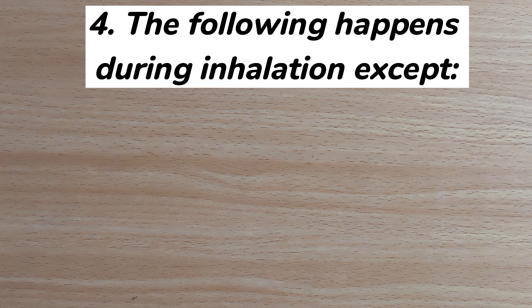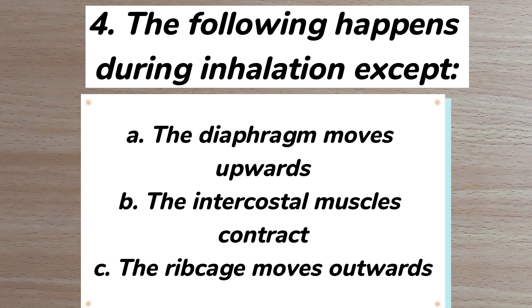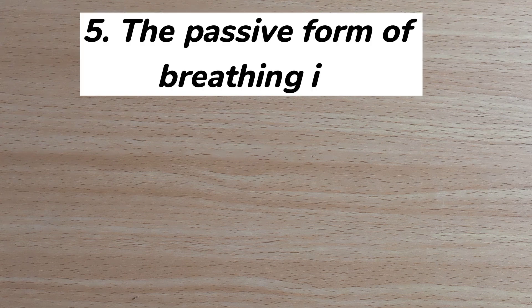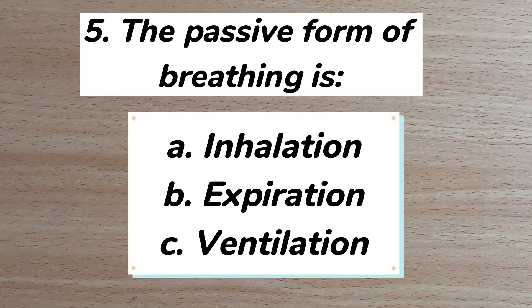Number four: the following happens during inhalation except — A) the diaphragm moves upwards, B) the intercostal muscles contract, C) the ribcage moves outwards. The correct answer is A: the diaphragm moves upwards. Number five: the passive form of breathing is A) inhalation, B) expiration, C) ventilation.